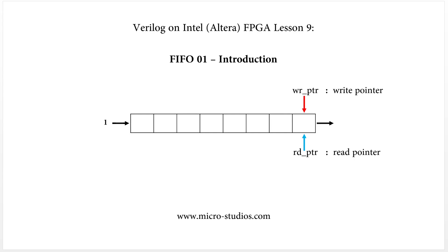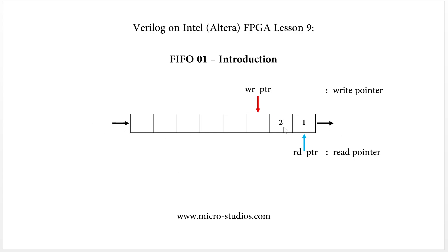Assume we have one data item that needs to be written into the FIFO. We will write it into the write pointer position, and the write pointer will move to the next position. Then there is another data item written into the FIFO, and the write pointer moves to the next position again.